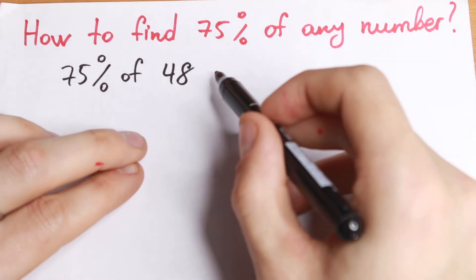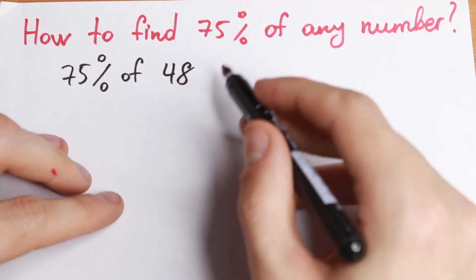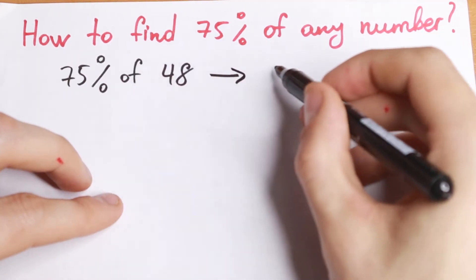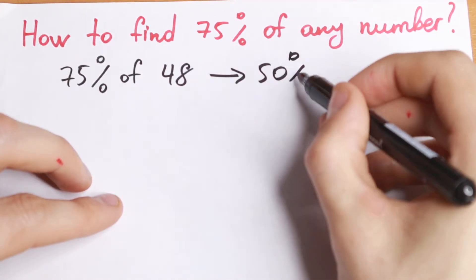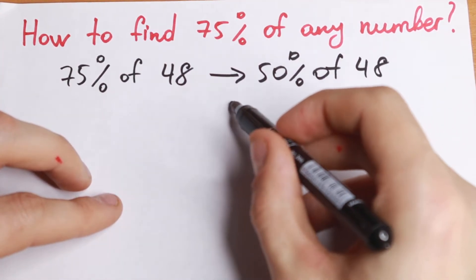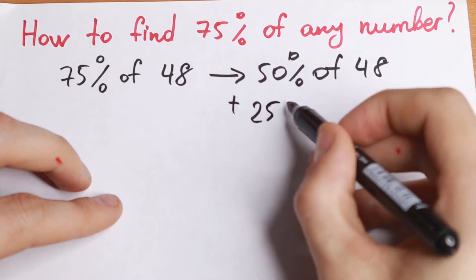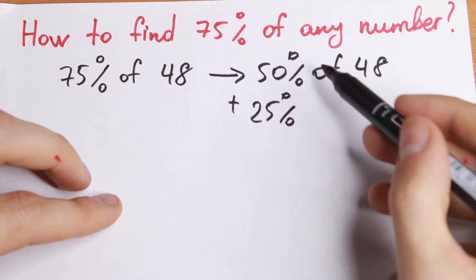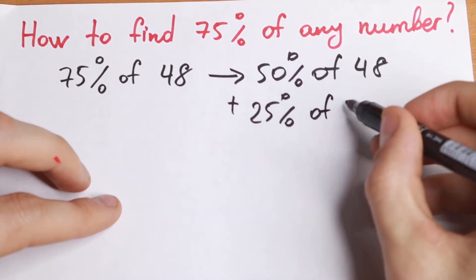You need to know one thing. If you want to find 75% of any number, you need to find 50% of this number. So we need to find a half of this number, 50%, and you need to add to this 25%, so a half of this 50%, of 48.